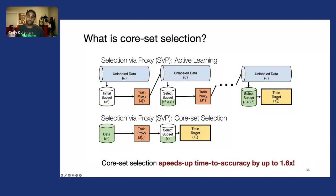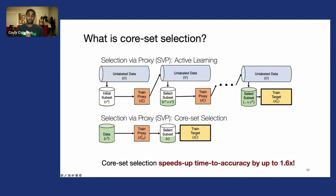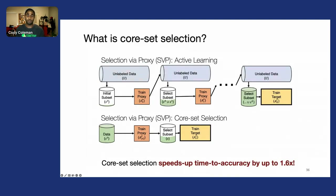We then only train our larger, more accurate model on that reduced subset. We find that even for fairly small and balanced datasets like CIFAR-10, we can achieve an end-to-end training time speedup of 1.6x without any loss in accuracy.